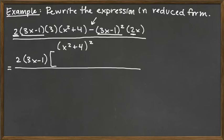So now what we need to do is figure out what's left over. Well, when we pull out the 2 times 3x minus 1, we have a factor of 3 left over and a factor of the x squared plus 4 left over. That's all that we have left that was before the subtraction sign.